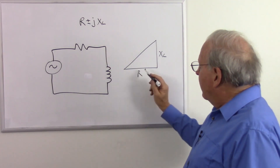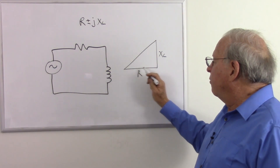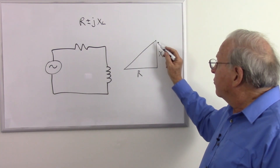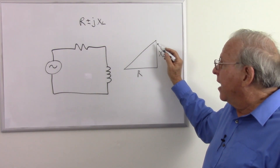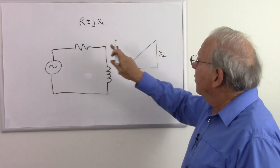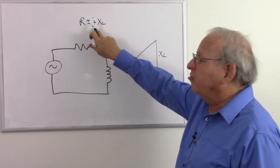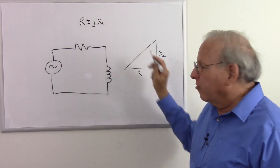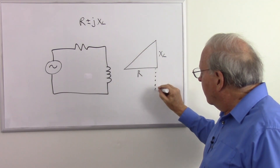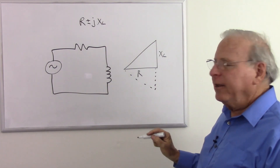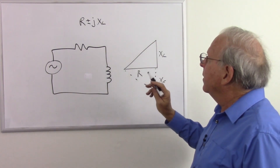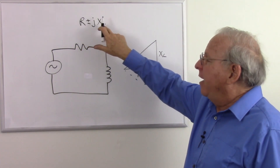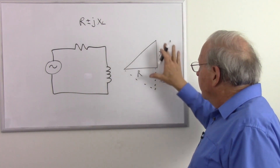So that describes the triangle: go this distance, which is directly proportional to the resistance, then make a 90-degree turn and go this distance, proportional to our inductive reactance. Resistance plus or minus j — where j says make a 90-degree turn, plus means turn left, minus means turn right. So if it was capacitive reactance, we would go the other way instead. Our complex number, which is a real number plus or minus an imaginary number, describes that triangle. We have to do our math with these complex numbers.